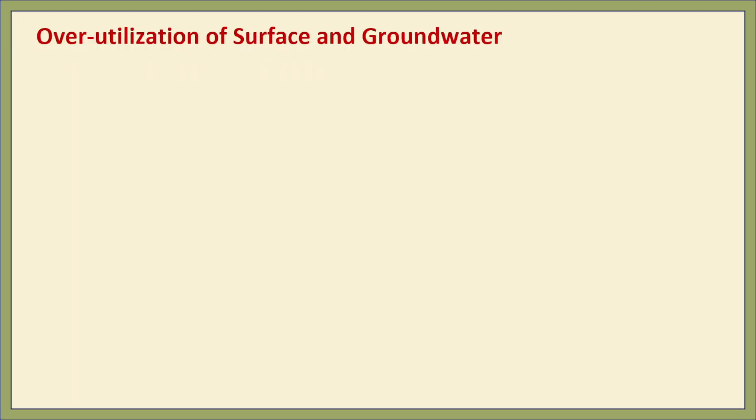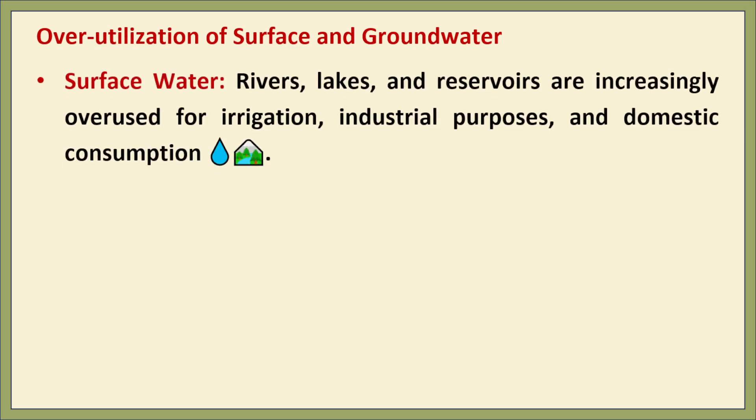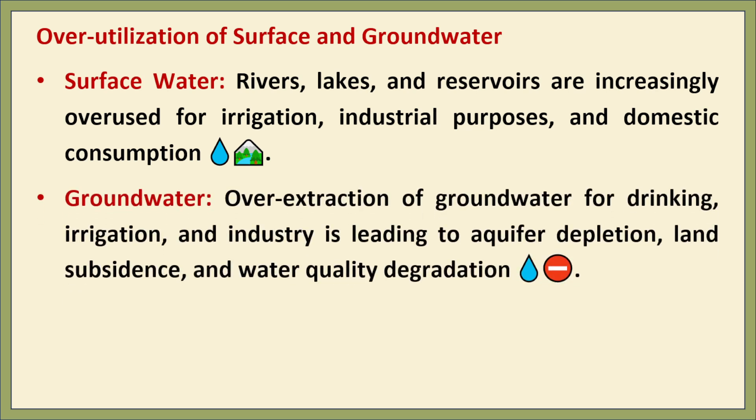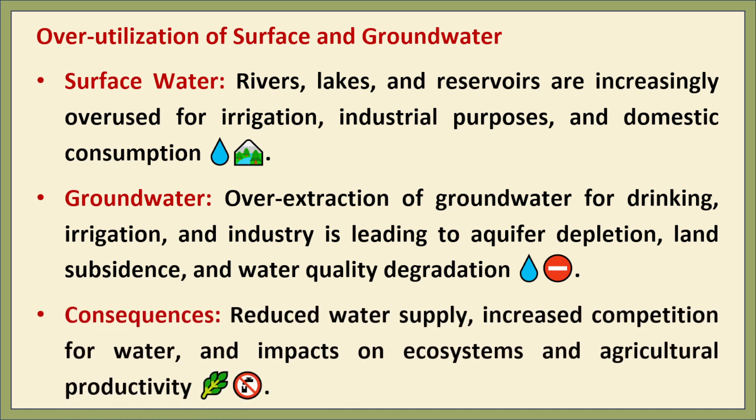Over-utilization of surface and groundwater. Unfortunately, we are overusing both surface and groundwater. Surface water from rivers, lakes and reservoirs is heavily used for irrigation, industries and domestic purposes. Groundwater is extracted through wells and bore wells, and is a lifeline in areas where surface water is insufficient. However, excess withdrawal is causing aquifers to dry up, and land is sinking due to the loss of underground water — a phenomenon known as land subsidence.